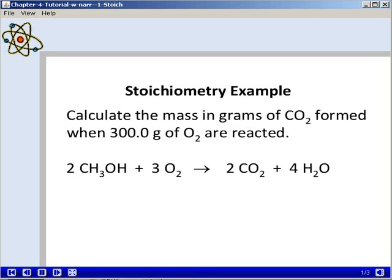In this stoichiometry example, we're asked to calculate the mass in grams of carbon dioxide formed when 300.0 grams of O2 are reacted. And we're given a balanced chemical equation to describe the reaction.